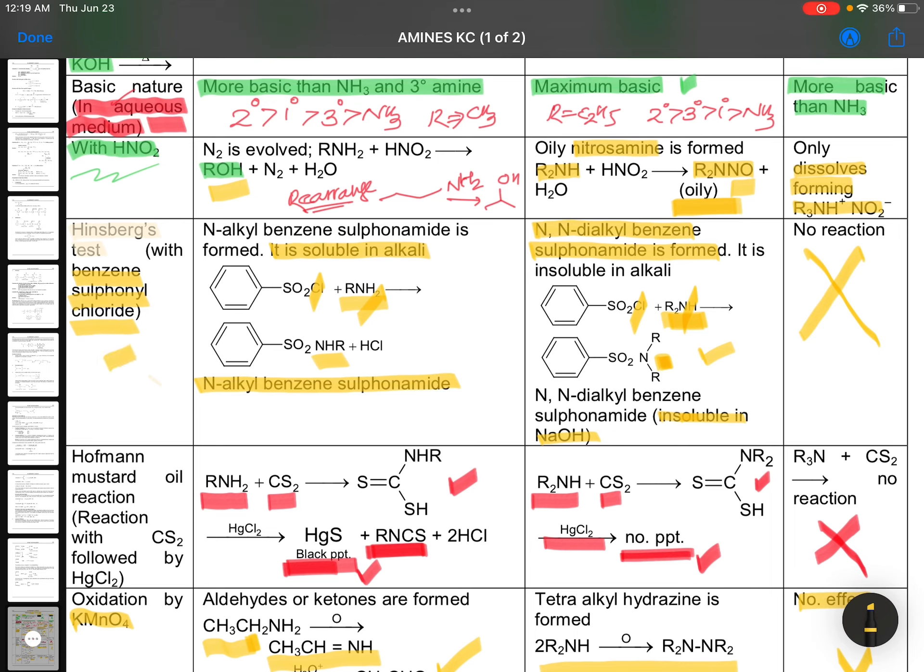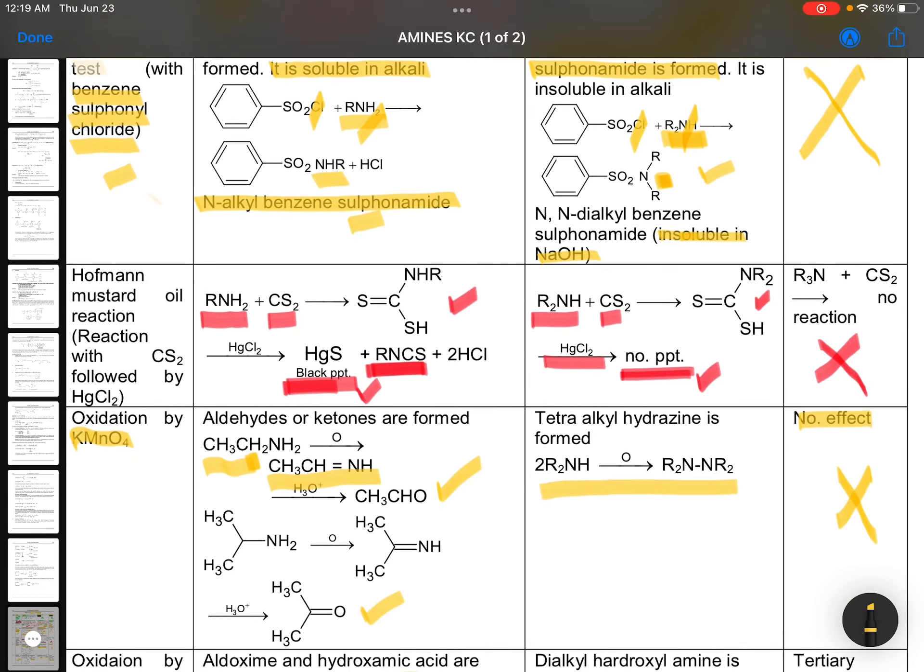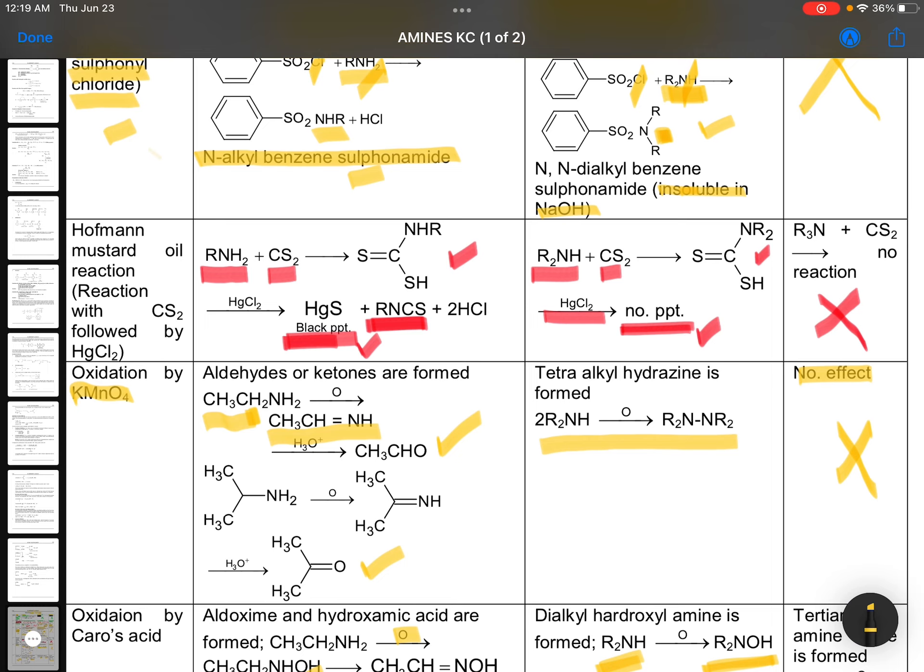Hinsberg reagent benzene sulfonyl chloride. Which gives you N-alkyl benzene sulfonamide. With secondary, that will be N,N-dialkyl. But the primary one is soluble in alkali. Secondary one is insoluble in alkali. Hofmann mustard oil reaction. Primary amines with CS2 followed by HgCl2 mercuric chloride. Gives you black PPT with mustard oil smell. Secondary, first step reaction is there. With HgCl2, there is no reaction. No precipitations. Tertiary also similar. No reaction.